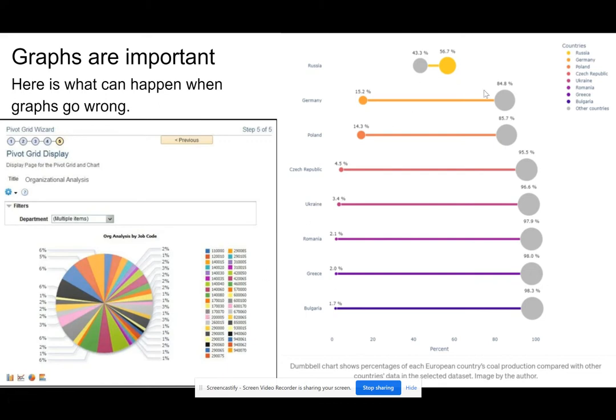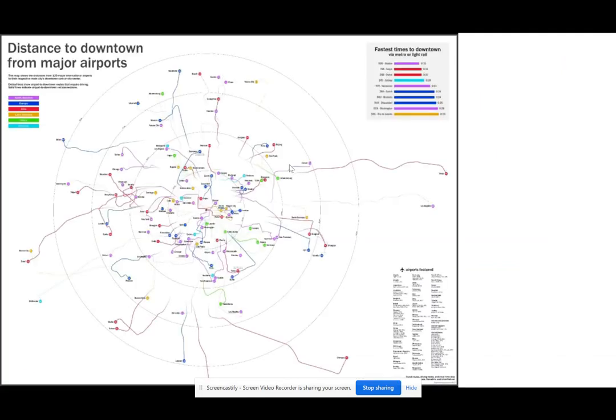Same thing over here — are we reading right to left or left to right? Who knows? This graph just looks like a tangle, like a knot in your shoelaces. It's not helpful; it doesn't tell us anything meaningful.